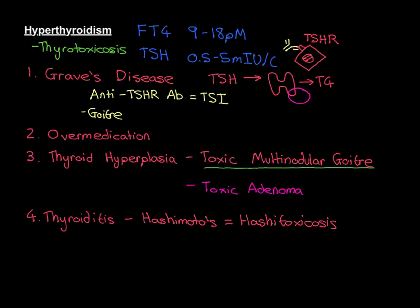It is important to stress that although hashitoxicosis can happen — a transient hyperthyroid period followed by hypothyroidism — it doesn't always work that way. Some people will just get hypothyroidism and will never get the transient hyperthyroidism. There are multiple different possible stories for Hashimoto's thyroiditis and indeed other forms of thyroiditis. The rarer forms — such as De Quervain's thyroiditis, postpartum thyroiditis, and Riedel's thyroiditis — can also follow that same course, initially causing hyperthyroidism before resulting in damage and hypothyroidism.